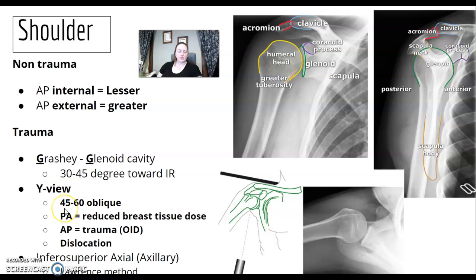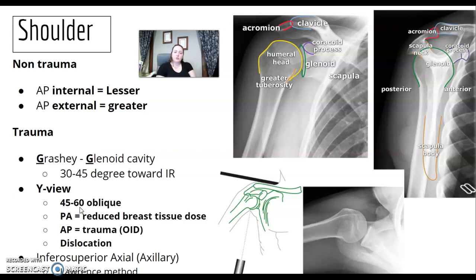The Y view is a steeper oblique at 45 to 60 degrees. If you did a Y view PA, it would reduce breast tissue dose, reduce OID, and might give you better spatial resolution. But realistically, in a trauma situation where the patient is dislocated, you're most often doing it AP on a stretcher — you're not going to turn that patient on their stomach.